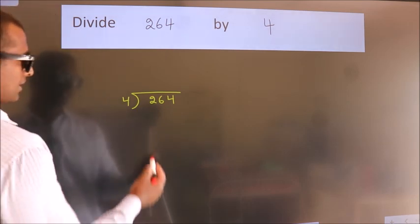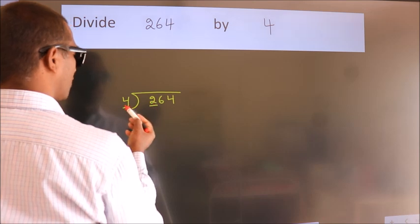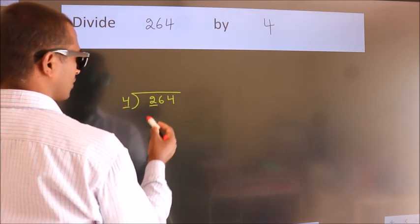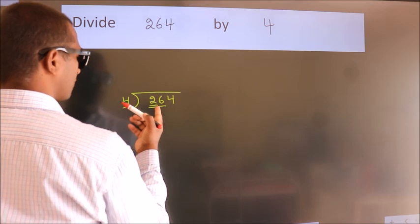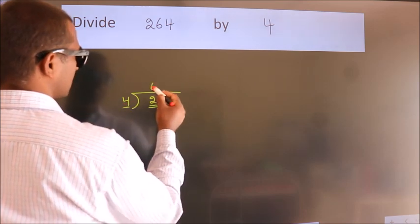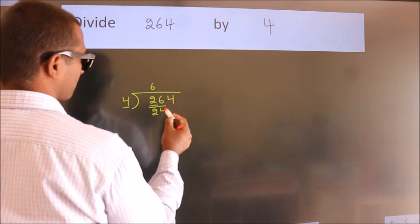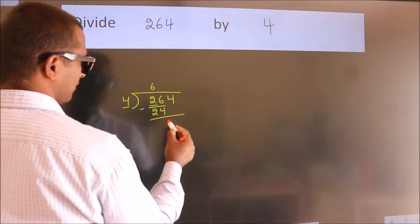Next, here we have 2, here 4. 2 is smaller than 4, so we should take 2 numbers: 26. A number close to 26 in the 4 table is 4 times 6 equals 24. Now we should subtract. We get 2.